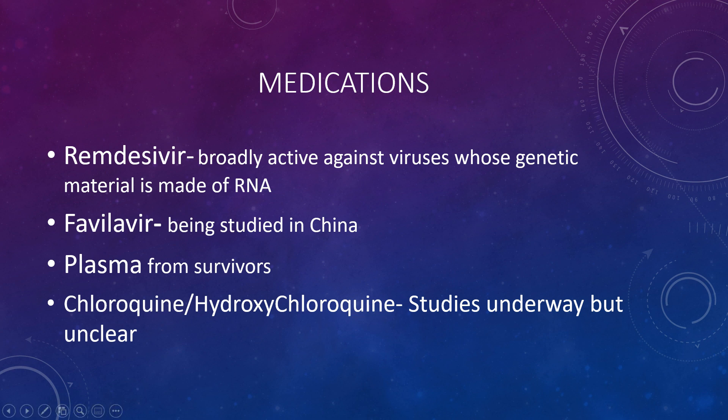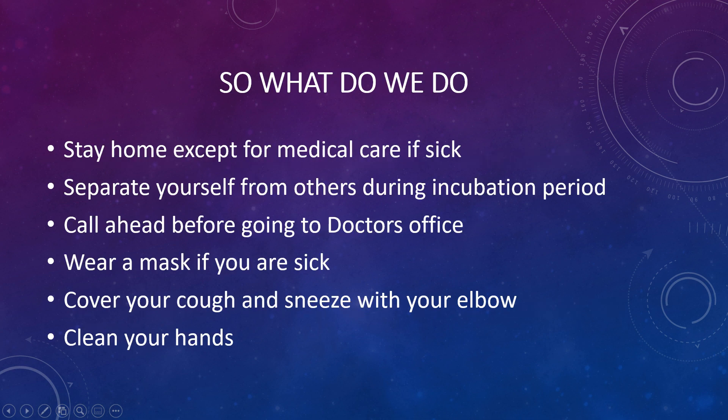The FDA has also approved plasma from survivors, which is quite interesting. Somebody who had the coronavirus and got over it has developed antibodies to the infection. You could take those antibodies and give them to somebody else to help them fight the infection. It's limited in that you have to develop the plasma from someone who has recovered from it, but for somebody who's critically ill, this may be life-saving.